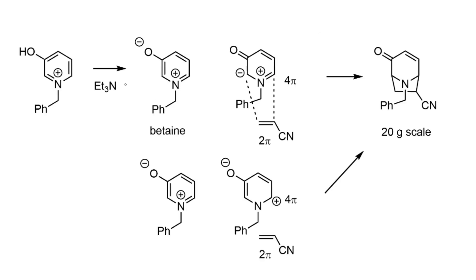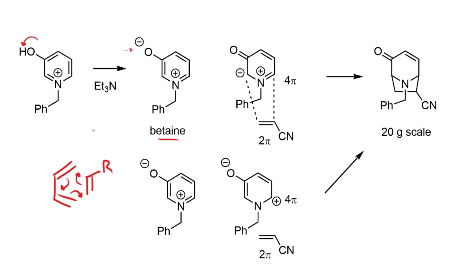This cycloaddition is a particularly interesting reaction. The first thing that happens is triethylamine deprotonates a hydroxy group to give an oxyanion, affording a betaine — a zwitterion where the molecule is overall neutral but has internal charges that cancel. These betaines react such that the aromaticity of the pyridine ring is disrupted during the cycloaddition. To rationalize the mechanism with arrow-pushing, this doesn't quite look like a standard Diels-Alder; we have to reconfigure the electrons in the pyridine ring to make it work.